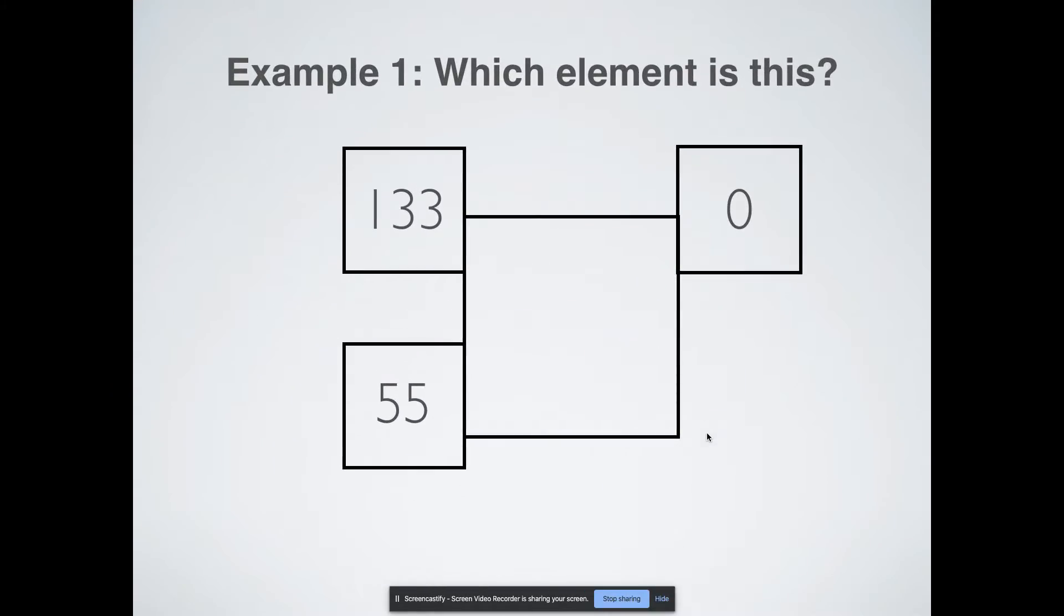So here we go. Which element is this? So remember, this is our mass number. This is our atomic number. This is our charge. So see if you can figure out on your periodic table what it is. Answer, number 55 is cesium. And so we actually didn't need these two pieces of information. Even if it just said number 55, we could find that and find cesium on the periodic table.